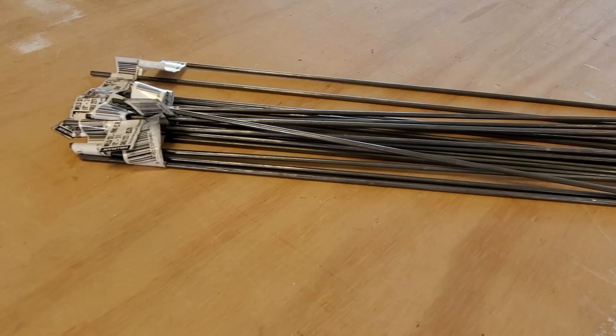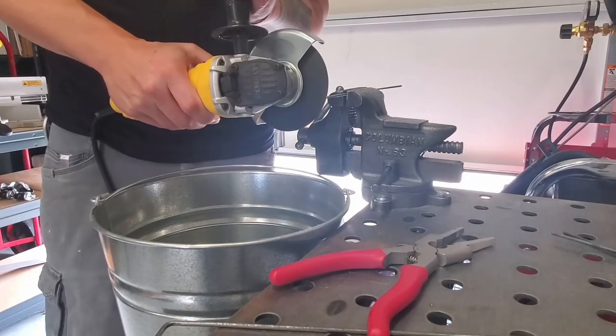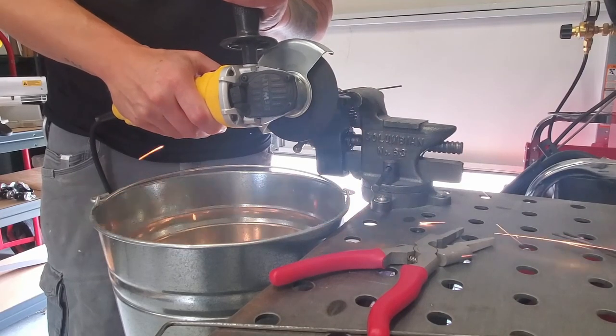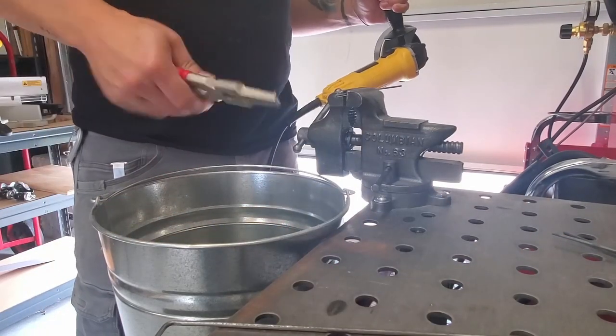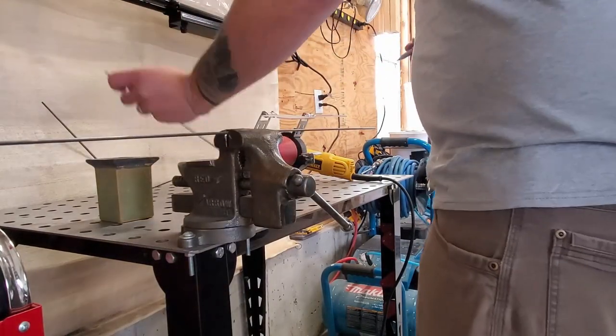I spent $30 on 18 gauge 3 foot long steel rods, bent them in the vise to make a rectangular shape after cutting them to length, and then cut out a cross section to go down the middle.